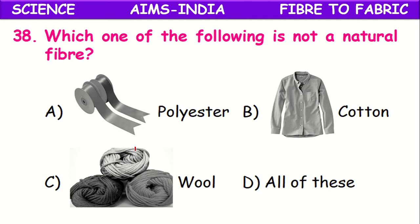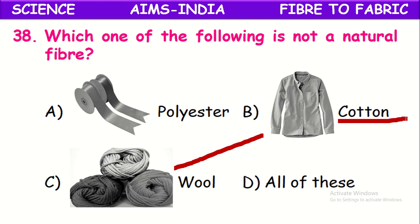Which one of the following is not a natural fiber? Cotton and wool are obtained from natural sources — wool from the hair of certain animals, so it is an animal fiber, and cotton from plants, so it is a plant fiber. Both are natural fibers. But polyester is a man-made fiber, not from natural sources, so it is not a natural fiber.